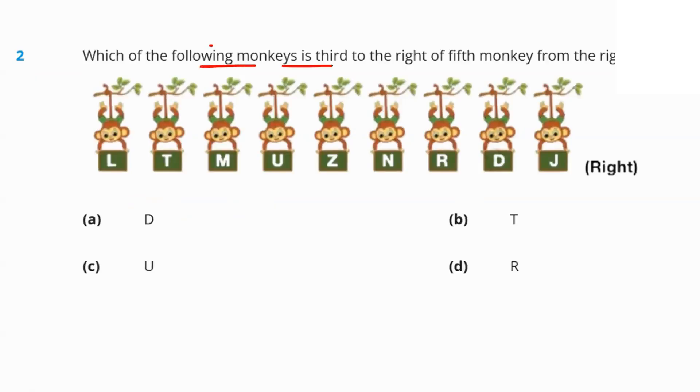Question number two, which of the following monkey is third to the right of fifth monkey from the right end? Fifth from the right end. One, two, three, four, five. Fifth monkey from the right end is Z. Third to the right of it. We move rightwards. Third to the right first second. That's monkey T. Hence, T is our answer.